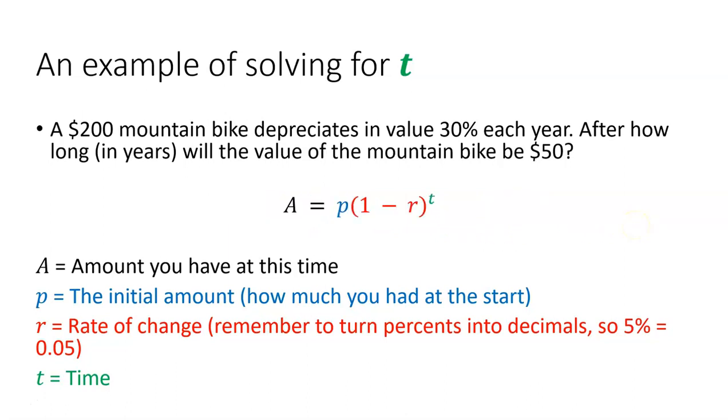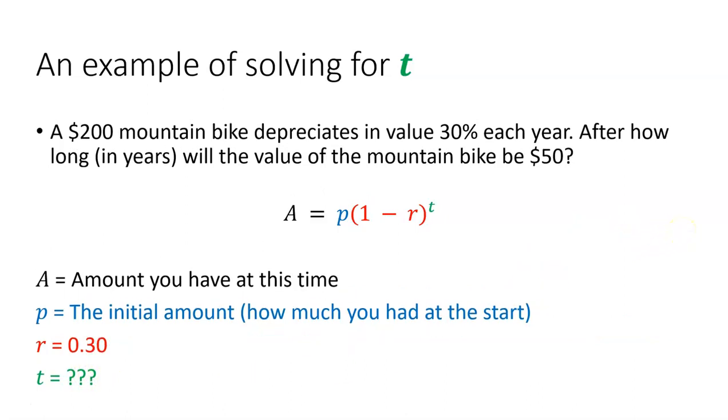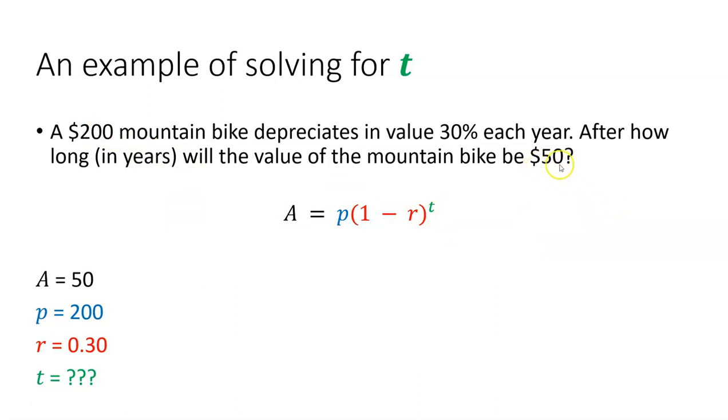All right. Now we can start dealing with A, p, r, and t by reading the problem. We don't know t, time. That's what we're trying to find out. So we'll put some question marks there or just leave it blank. We don't know what time is. We do know the rate of change. It's dropping 30% every year. We see that in the problem here. So that's what r will be. Our initial amount for the bicycle is the $200. And our ending amount, the amount we have at this time, however many years later, is $50. So we're ready to plug those values into our formula.